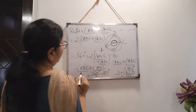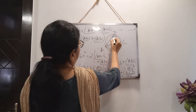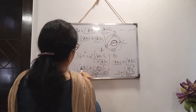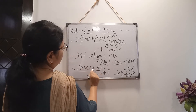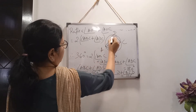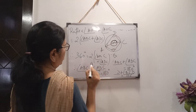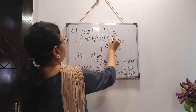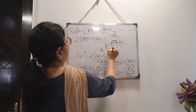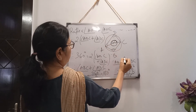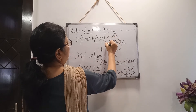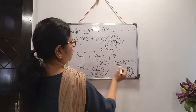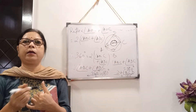So we have proved that the opposite angles of a cyclic quadrilateral are supplementary. These two are opposite angles and their sum is 180 degrees. By a similar method, we can prove that angle BAD plus angle BCD equals 180 degrees.